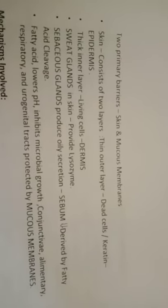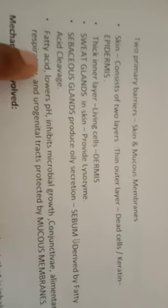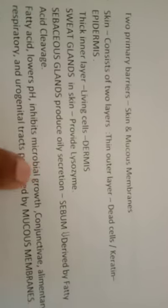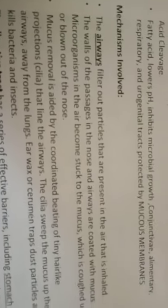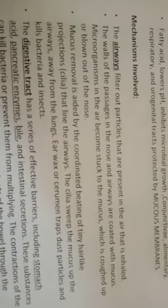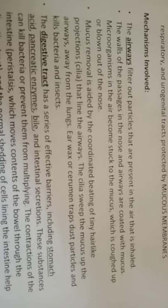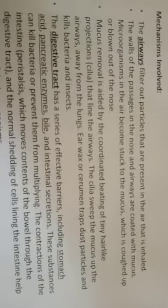The mucous membrane produces mucous secretion. Fatty acids lower the pH. The airways filter out particles present in inhaled air. The walls of passages in the nose and airways are coated with mucus. Microorganisms in air become stuck to the mucus, which is coughed up and blown out of the nose. Mucus removal is aided by coordinated beating of tiny hair-like projections called cilia that line the airways. The cilia sweep the mucus up the airways, away from the lungs.